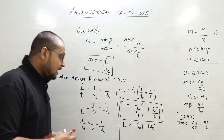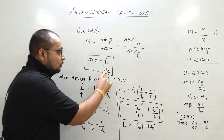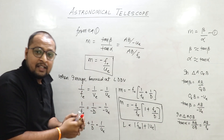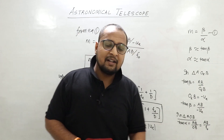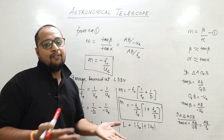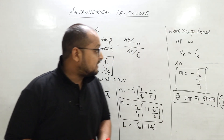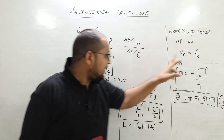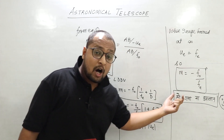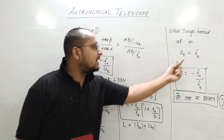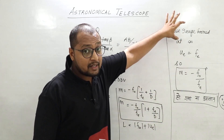Now comes the second case, in which we say that the image is forming at infinity. So what will ue become? If the image formed by the objective falls at the focus of the eyepiece, the final image forms at infinity — meaning ue equals fe. In the derivation, as soon as I talk about infinity, I set ue equal to fe and substitute fe in place of ue. My magnification becomes minus fo/fe, and the length of the tube becomes fo + fe — in the case when the image is formed at infinity.